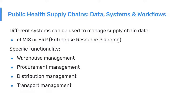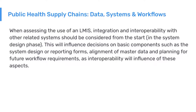Different systems can be used for managing the supply chain, from an eLMIS — an electronic logistics management information system focusing on data — to an ERP, an enterprise resource planning software which has much broader functions and incorporates finance and other aspects. Specific functionality of central software includes warehouse management, procurement management, distribution management, and transport management. When assessing the need for an LMIS, integration and interoperability with other related systems should be considered from the start, as this influences decisions on system design, reporting forms, and alignment of different types of master data.